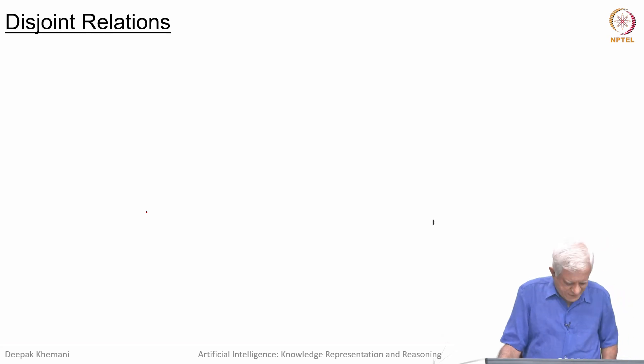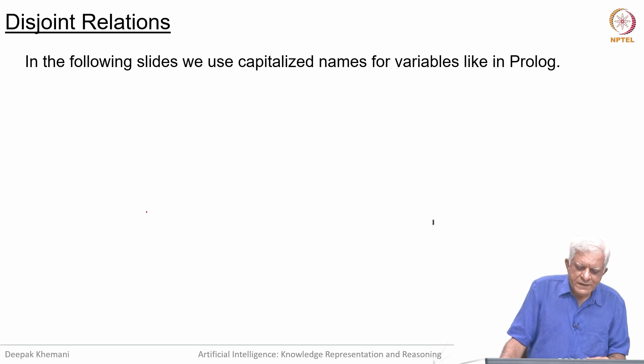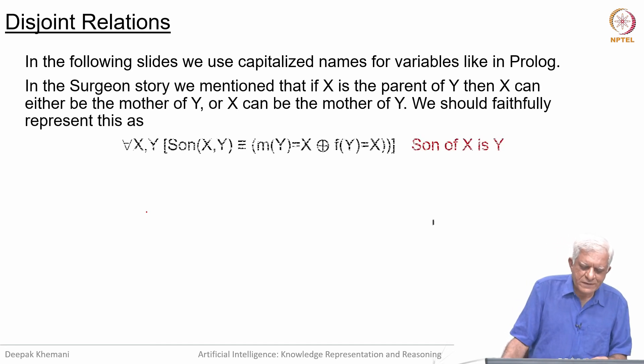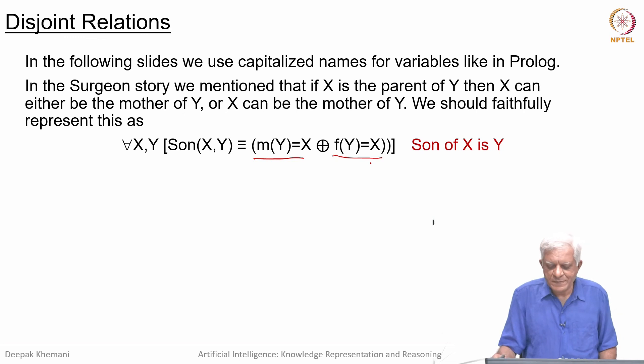We have talked about disjointness—you can be either one thing or the other. From now on, we will use capitalized names for variables in the style of Prolog, and lowercase for individuals or constants. If you remember the surgeon story, we mentioned that if X is a parent of Y, then X can either be the mother or the father. We should faithfully represent this: if the son of X is Y, then X is the mother of Y or X is the father of Y, but both cannot happen at the same time. The exclusive or is the correct way to represent that.